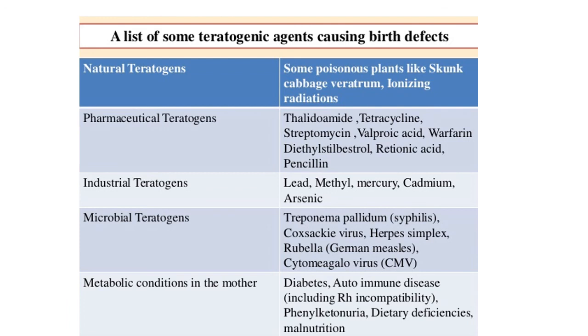Teratogenic agents include pharmaceutical agents such as thalidomide, tetracycline, streptomycin, valproic acid, warfarin, penicillin, and retinoic acid. Industrial teratogens include lead, methyl mercury, cadmium, and arsenic. Microbial teratogens include Treponema pallidum, herpes simplex, rubella, and cytomegalovirus. Metabolic conditions in the mother such as diabetes, autoimmune diseases, and phenylketonuria are also teratogenic risk factors.